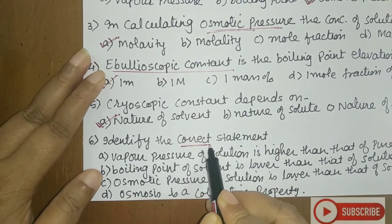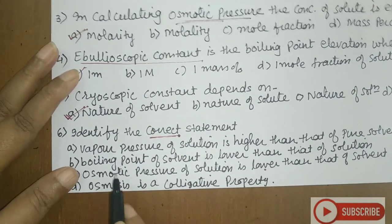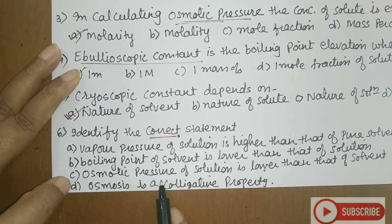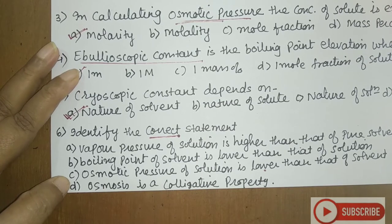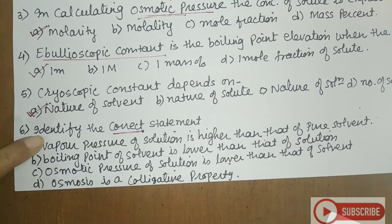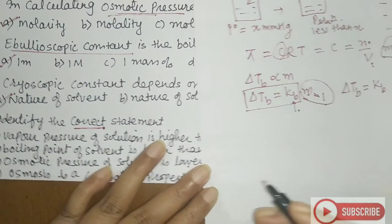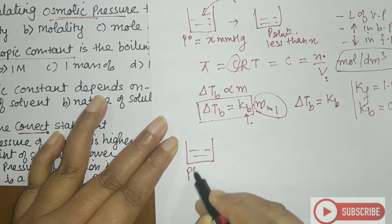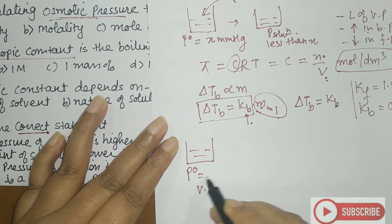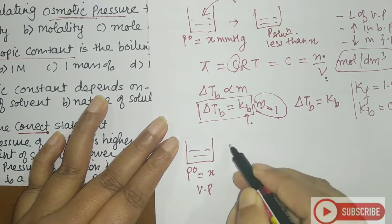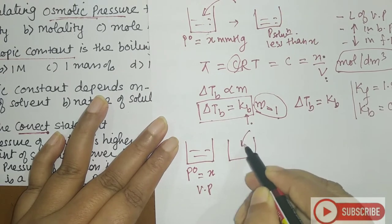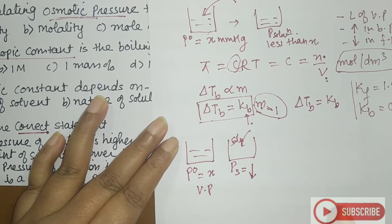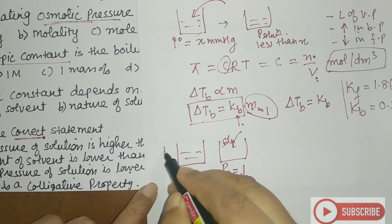Next question: identify the correct statement. They're discussing vapor pressure, boiling point, and osmotic pressure — colligative properties. For vapor pressure: when a solute is added to a pure solvent, the vapor pressure of the solution is less than that of the pure solvent. So vapor pressure of the solution is lower than that of the pure solvent.